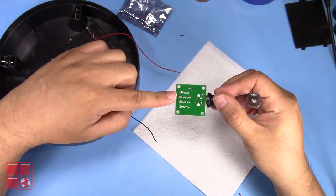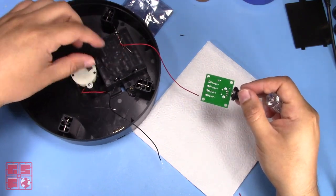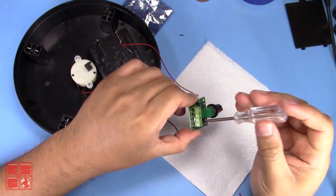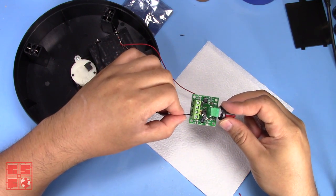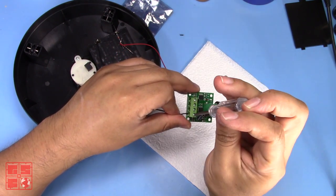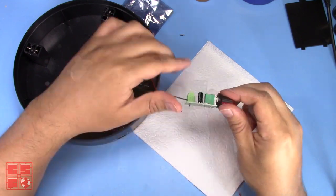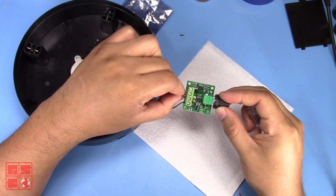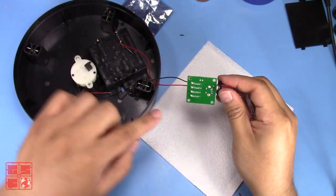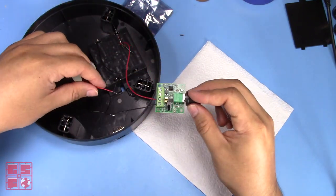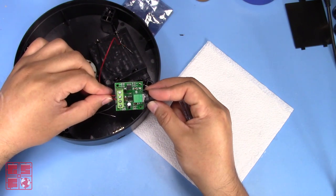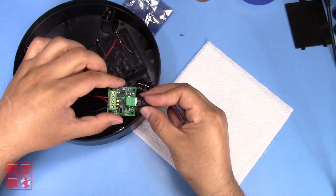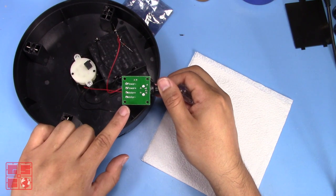Now I can go ahead and connect all the leads to the appropriate connectors on the speed controller. I start with the negative lead to the battery box. Then the positive lead to the battery box. Next is the positive lead to the motor. And finally, the negative lead to the motor.